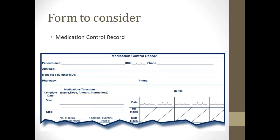Here's a form you might want to consider — it's called a medication control record. It includes the patient name, date of birth, phone numbers, allergies, medications prescribed by other physicians, the patient's pharmacy and phone number. It also lists the completion date of when it starts, the medication name, dose, amount, instructions, refills, staff sign-off, and physician signature. If it's a sample, the quantity is noted as well. This is a good form for drug rep samples — you really should be documenting when you give out drug rep samples.